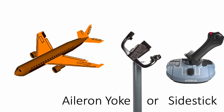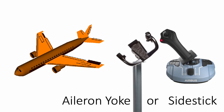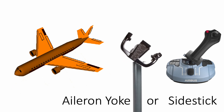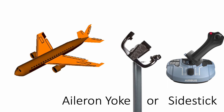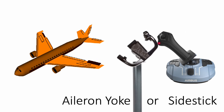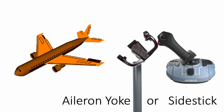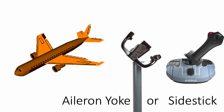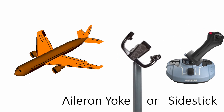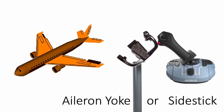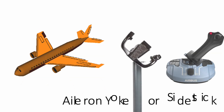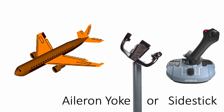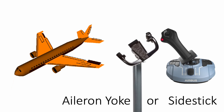Unlike the rudders that move in the same direction, the ailerons move in opposing ones where one aileron goes up and the other one goes down. This makes it possible to roll the airplane clockwise or counterclockwise. By putting the wings at different flight levels, there would be a difference in airspeed.